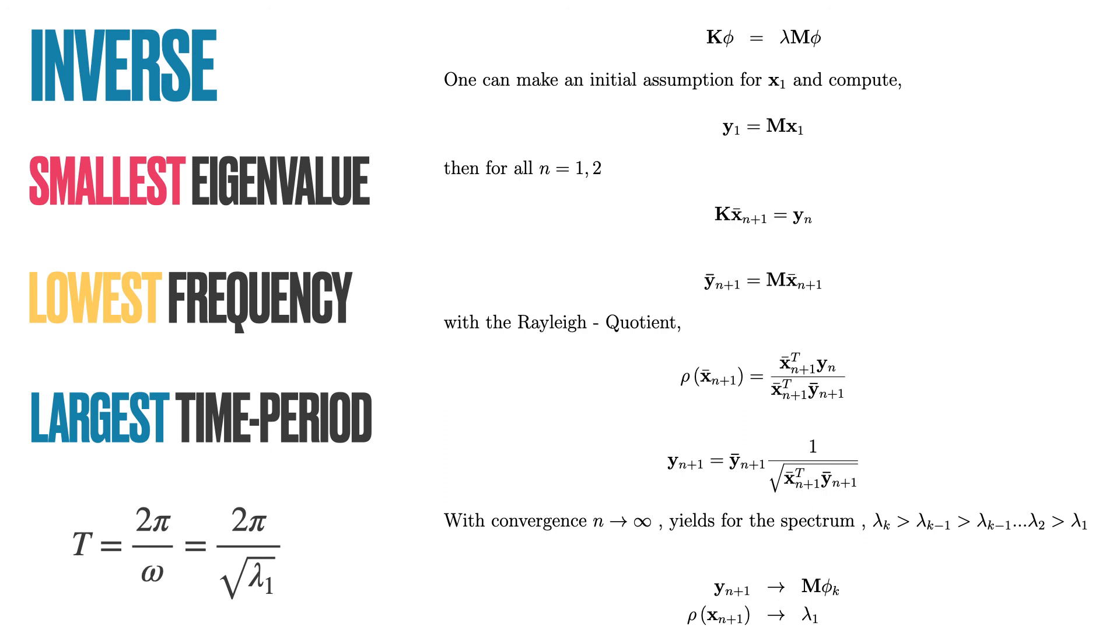So to recap, the inverse iteration gives us the smallest eigenvalue, the lowest frequency, and the largest time period.